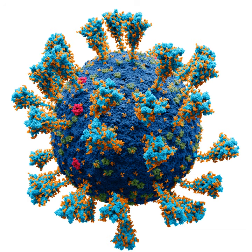In 1899, the Dutch microbiologist Martinus Beijerinck observed that the agent multiplied only in dividing cells. Having failed to demonstrate its particulate nature, he called it a contagium vivum fluidum, meaning soluble living germ. In the early 20th century, the English bacteriologist Frederick Twort discovered viruses that infect bacteria, and the French-Canadian microbiologist Félix d'Hérelle described viruses that, when added to bacteria growing on agar, would lead to the formation of whole areas of dead bacteria. Counting these dead areas allowed him to calculate the number of viruses in the suspension.